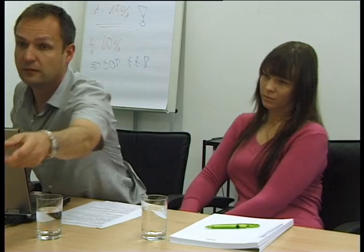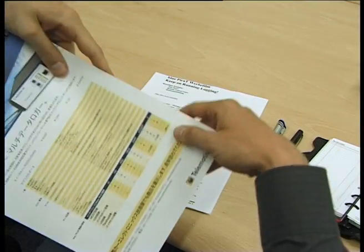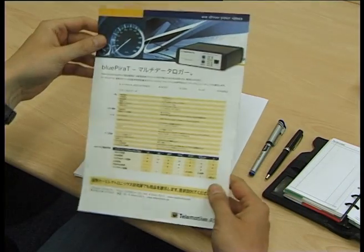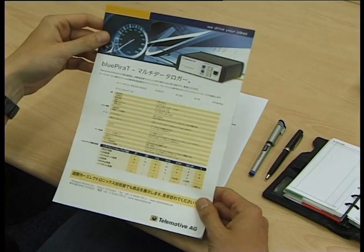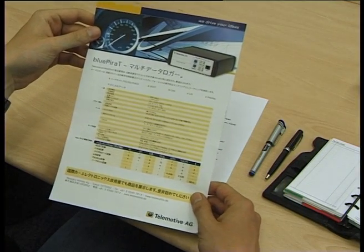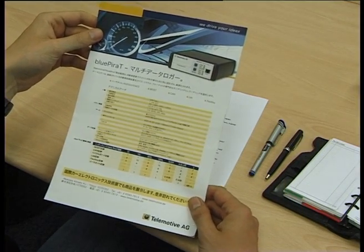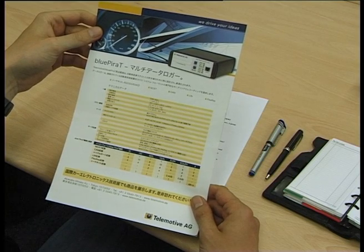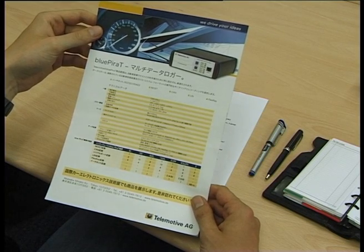Here, look. I found this data logger from Telemotive — the Blue Pirate. It can record MOST, CAN, LIN, FlexRay, and video data all at the same time with synchronous timestamps.